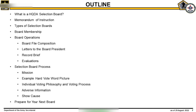This is the outline we will follow. We will first highlight what a DA Selection Board is, then explain the Memorandum of Instruction, or MOI, and review the types of Officer and Warrant Officer Selection Boards. We will explain how the boards work and focus on the selection board process, discussing what you can do to prepare yourself and others for the next board. Lastly, you will have an opportunity to see how a board member votes a file.